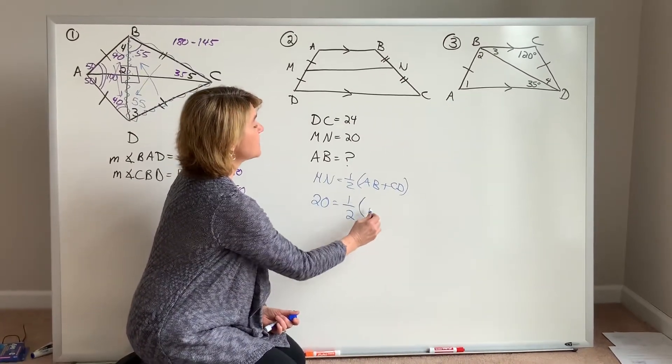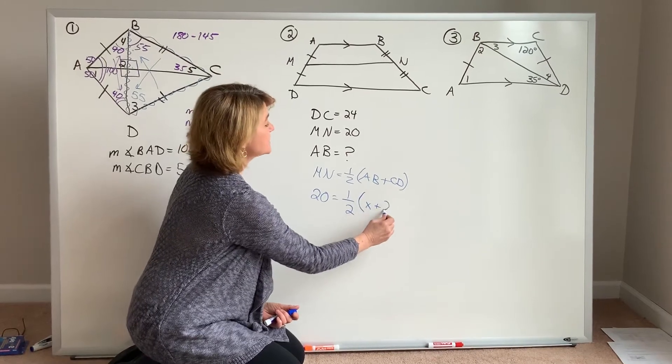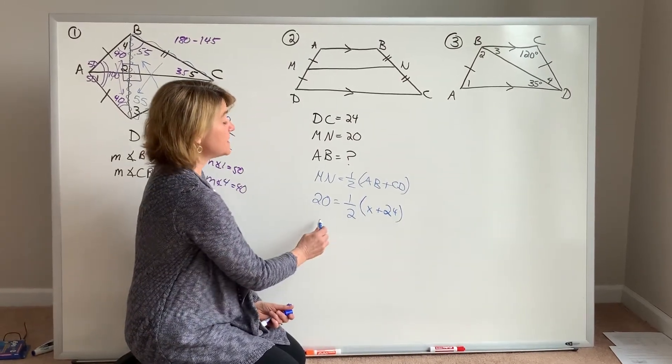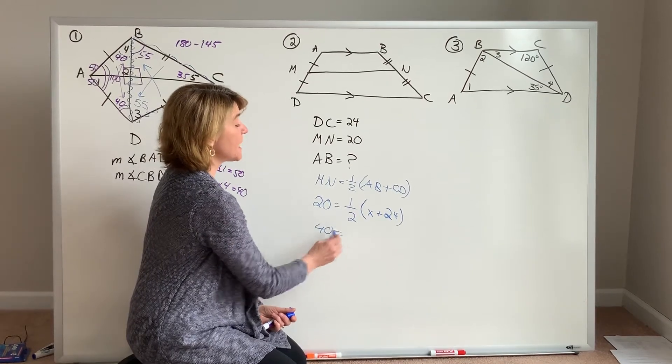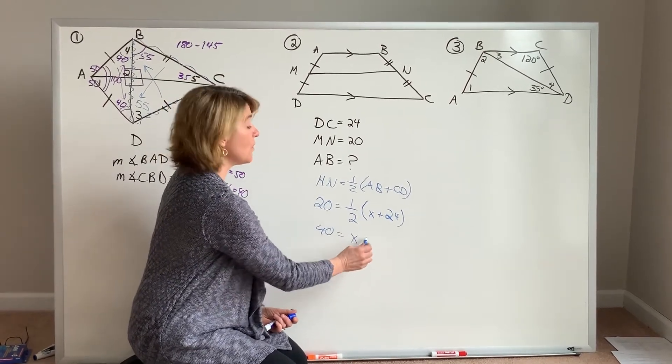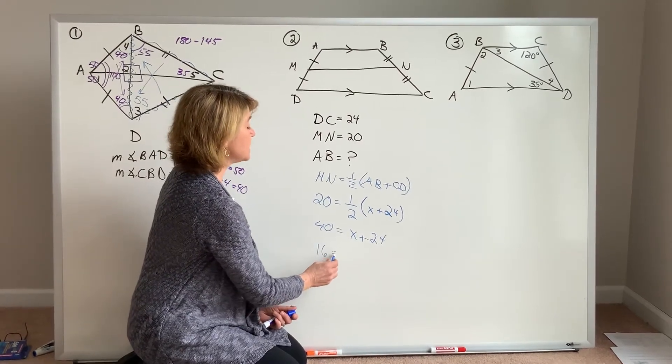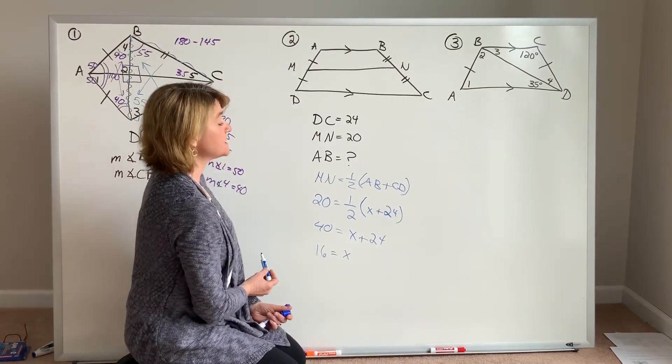To me, the easiest way to solve this is to say let's double each side, so 40 would equal X plus 24, and then we can subtract 40 from each side to get X is equal to 16.